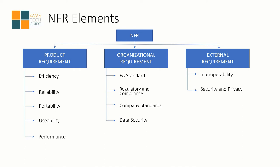What are the NFR elements? I have categorized the NFR elements into three categories. There is no specific fixed set of NFR — an NFR document can be 2 pages or 20 pages, depending on what product attributes or quality requirements you want to capture in your project. The three categories are: product requirement, organizational requirement, and external requirement. The product requirement covers how efficient, reliable, portable, and usable the product should be, and how the performance should behave — all described precisely and quantifiably.